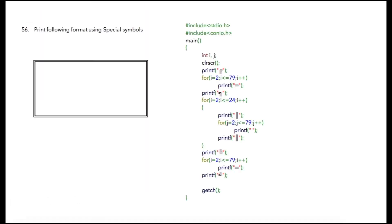In this program we are required to print output like this. This program is almost similar to the previous one, but here the output will display a complete square. Before we start the program, let me explain.